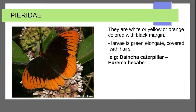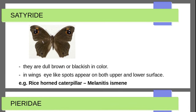Pieridae — they are white, yellow, or orange colored with black margins. Larva is green, elongate, and covered with hair. The caterpillar's scientific name includes the species in this family.